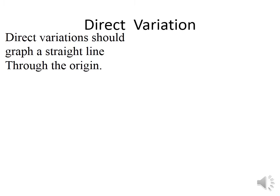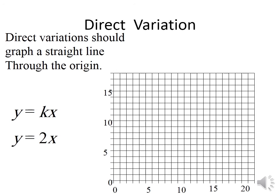Direct variation is always written in the form y equals k times x, where k is a non-zero constant. If we have a relation like y equals 2x and put x equals 0, then y equals 0. So the graph of direct variation always passes through the origin (0, 0). In direct variation, the graph is a straight line — a linear function — and this straight line must pass through the origin point.